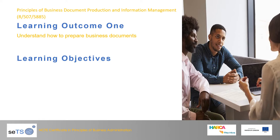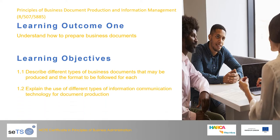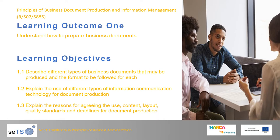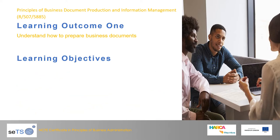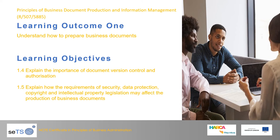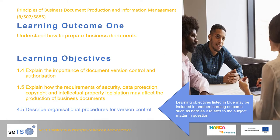In this section we will look at how to prepare business documents. We will describe different types of business documents that may be produced and the format to be followed for each, explain the use of different types of ICT for document production, explain reasons for agreeing the use, content, layout, quality standards and deadlines for document production, explain the importance of document version control and authorisation, and describe organisational procedures for version control.